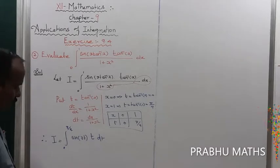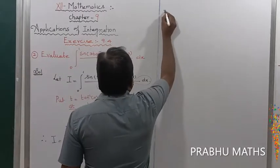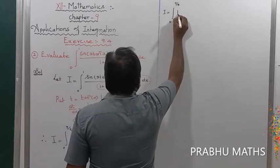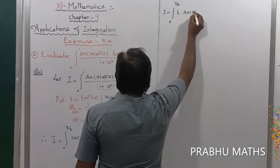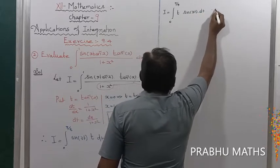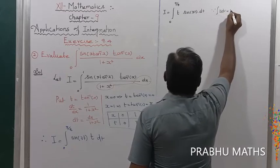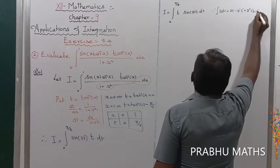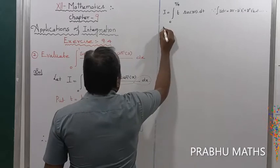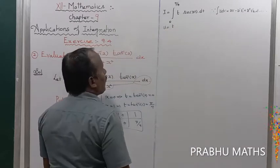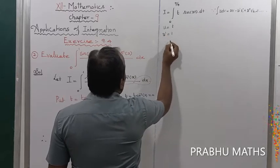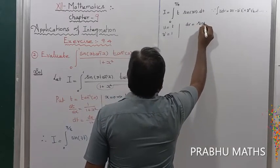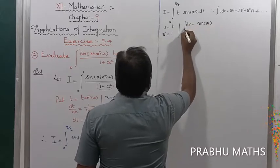So i = ∫₀^(π/4) t·sin(3t) dt. This is in the format for Bernoulli's formula: ∫u dv = uv − u'v₁ + u''v₂ − ... We set u = t, so u' = 1 and u'' = 0, so the process stops. The remaining factor dv = sin(3t) dt.